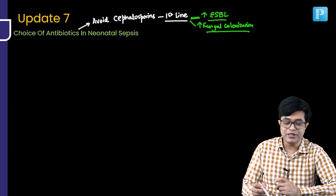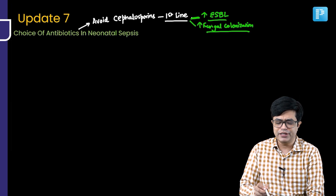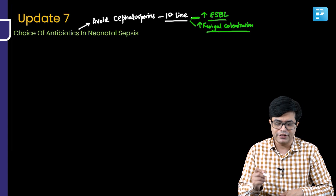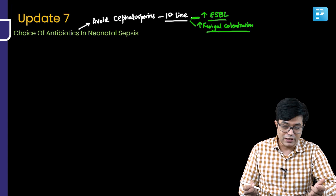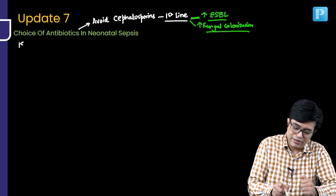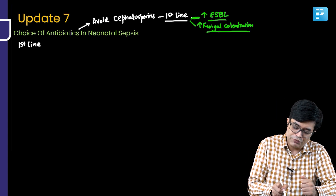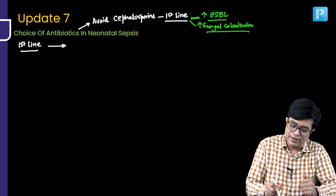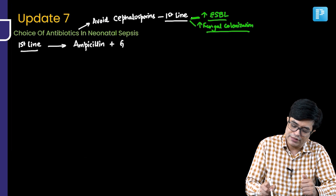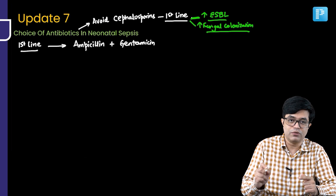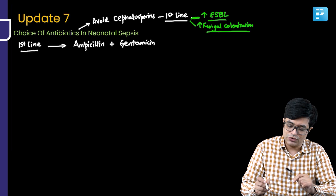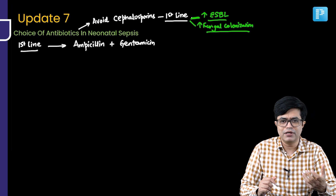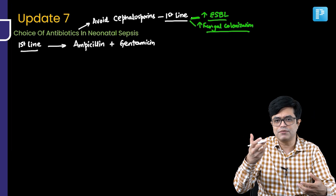You will use cephalosporins where needed, but they should be avoided as first-line therapy. For community-acquired sepsis, the first-line choice will be penicillin or ampicillin. In practice, we use ampicillin along with gentamicin — one beta-lactam of the penicillin group along with an aminoglycoside — providing broad-spectrum empirical therapy. Once the culture comes, you will always change.